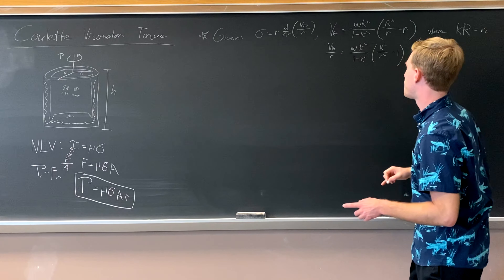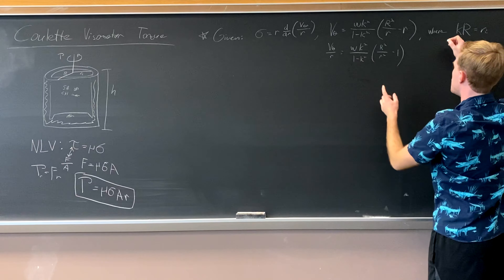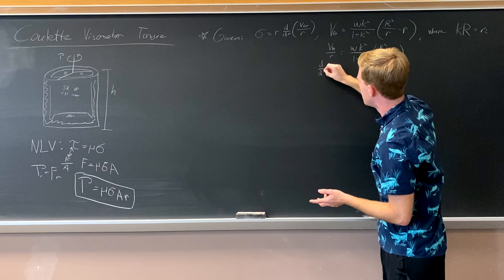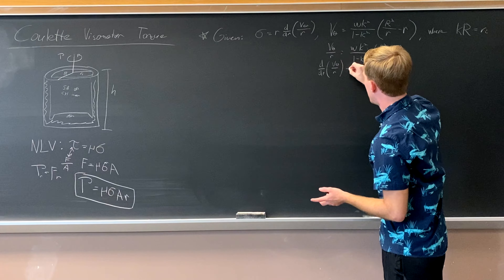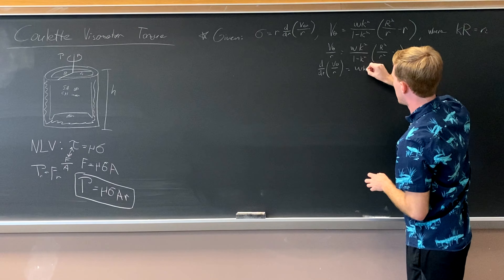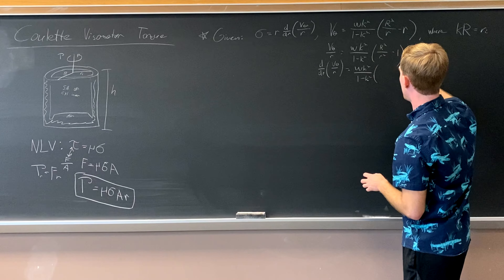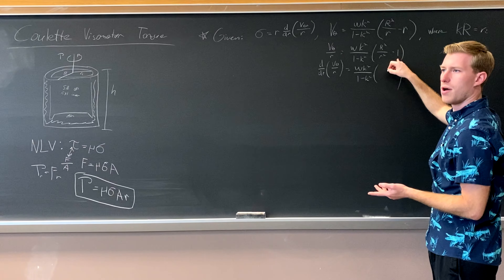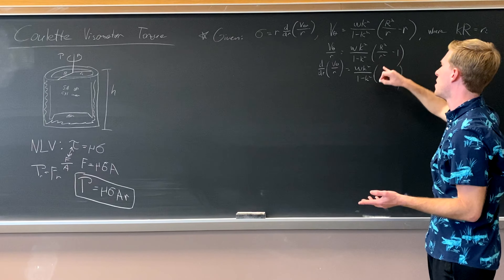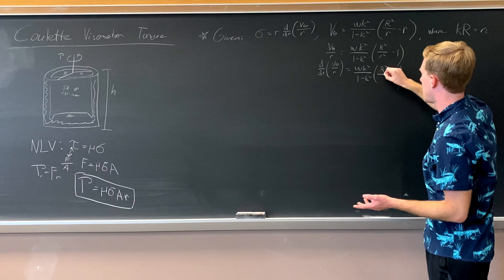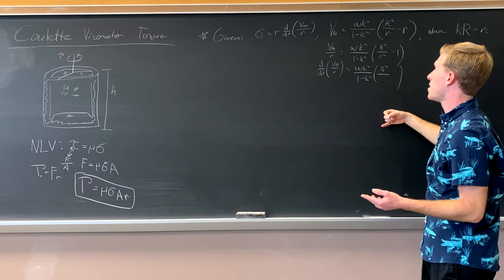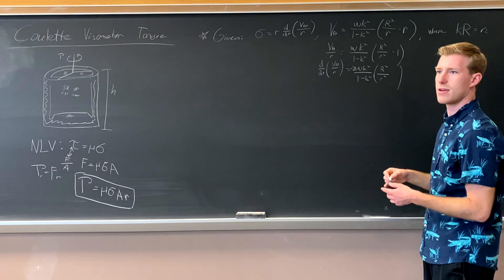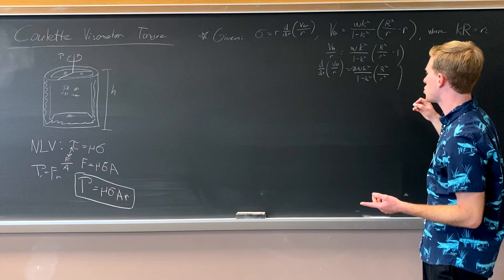Now all we have to do is take the derivative of that. The leading constant omega k squared over (1 minus k squared) is pulled out. The derivative of negative 1 is zero since it's a constant. For the remaining term, capital R squared is a constant, and the derivative of r to the negative 2 is negative 2 times r to the negative 3. So we add a negative 2 out front and r to the third on the bottom.